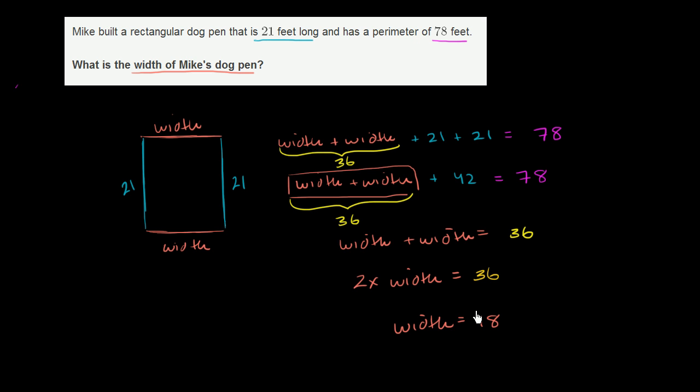And you might say, well, how did I know, how did I figure out that the width is equal to 18? Well, there's a couple of ways to think about it. If two times the width is equal to 36, then the width must be equal to 36 divided by 2. Must be equal to 36 over 2, which would also get you 18.